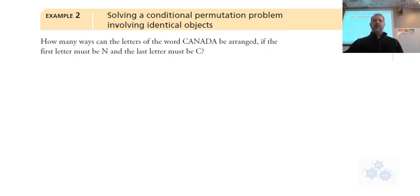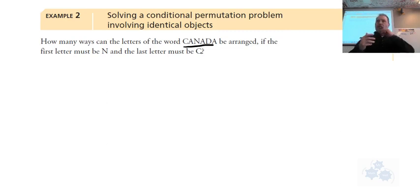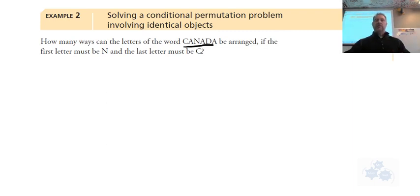In the second example: how many ways can the letters of the word CANADA be arranged if the first letter must be an N and the last letter must be a C? I'd suggest using a mixture of the fundamental counting principle and the permutation formula. The word CANADA is C, A, N, A, D, A.